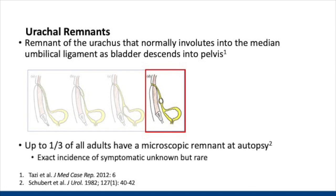Approximately one-third of all adults on autopsy studies will have some sort of microscopic remnant, but the frequency of urachal remnants that become clinically apparent is very rare, and the exact incidence is unknown.